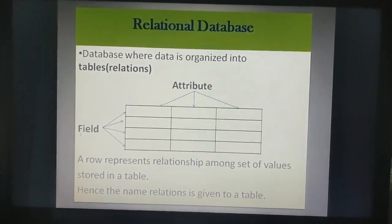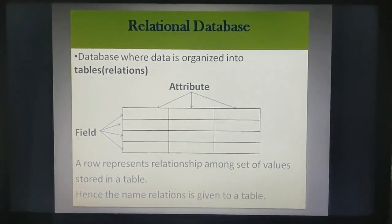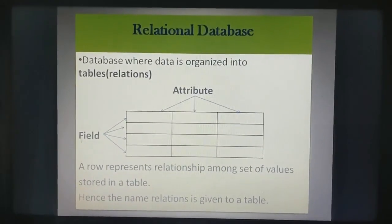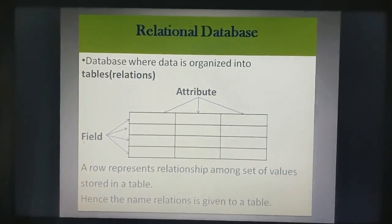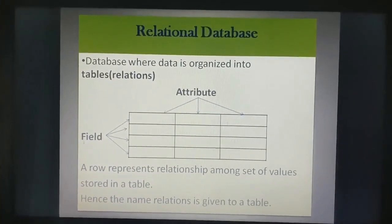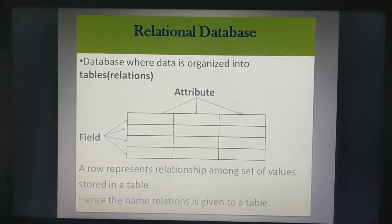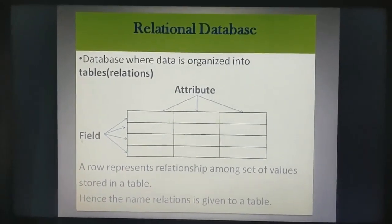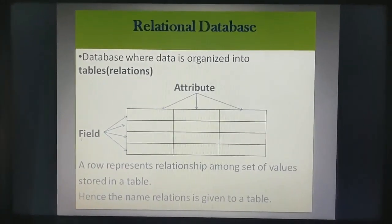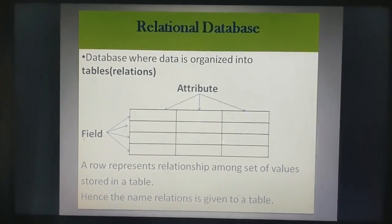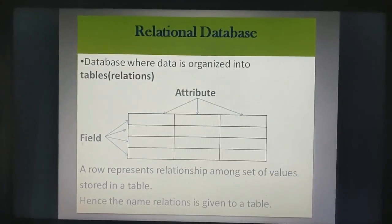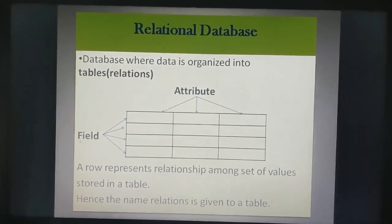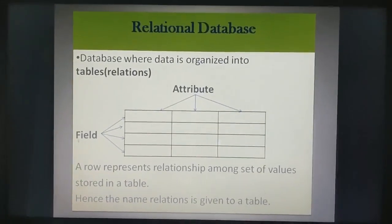You can see a table over here which consists of 3 columns and 4 rows. Rows are called fields and columns are called attributes. Now every value or record that you store inside this table has got a relationship among themselves, because of which the name relation is given to a table. So the alternate name for tables is also relation.